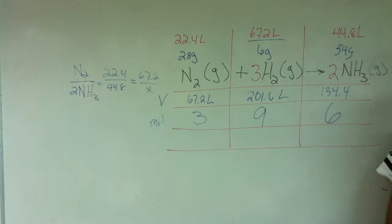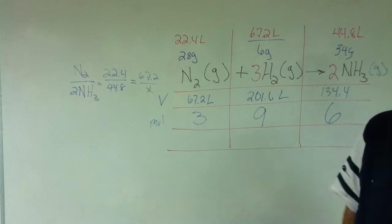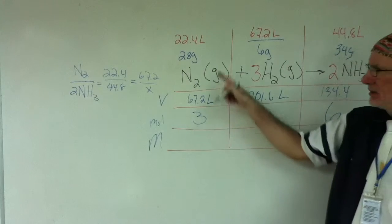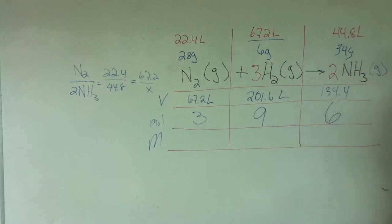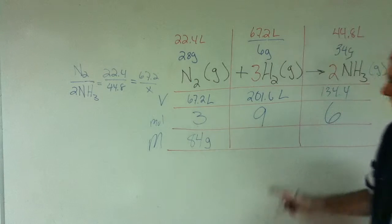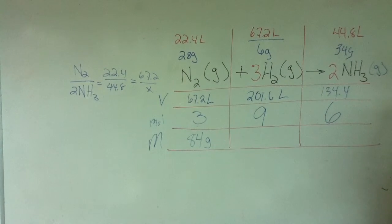How about here? Six. 134.4 divided by 22.4 is? Six. What about mass? What's the mass of this? What's the mass of three moles of nitrogen? Come on, guys. Twenty-eight times three. What is it? Eighty-four. What about nine moles of hydrogen? How many moles? There's nine moles there. What's the mass of one mole of hydrogen? You made the same mistake I told you to be careful of. Hydrogen gas. Diatomic. Two. So what is it? Eighteen.